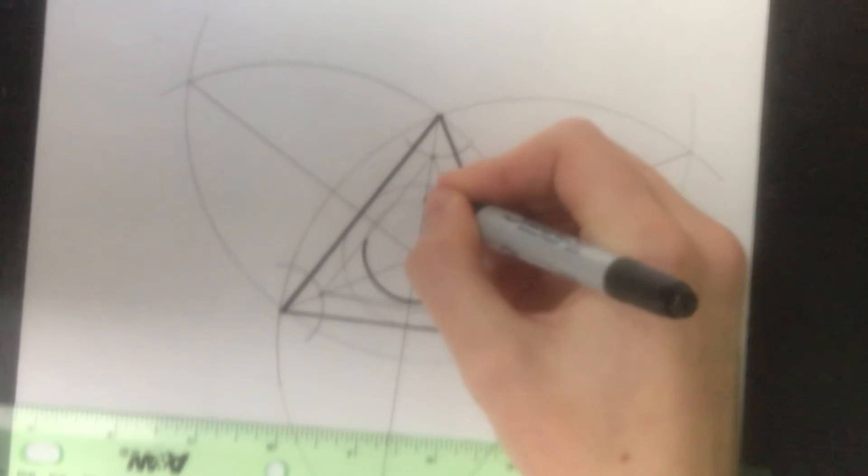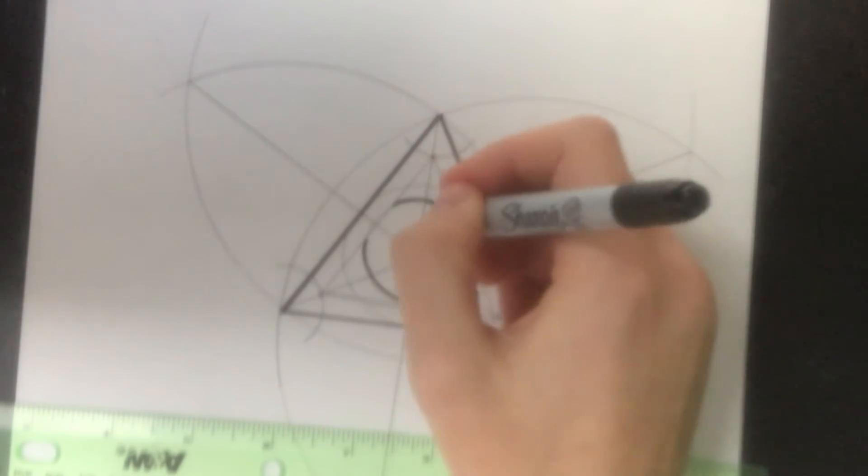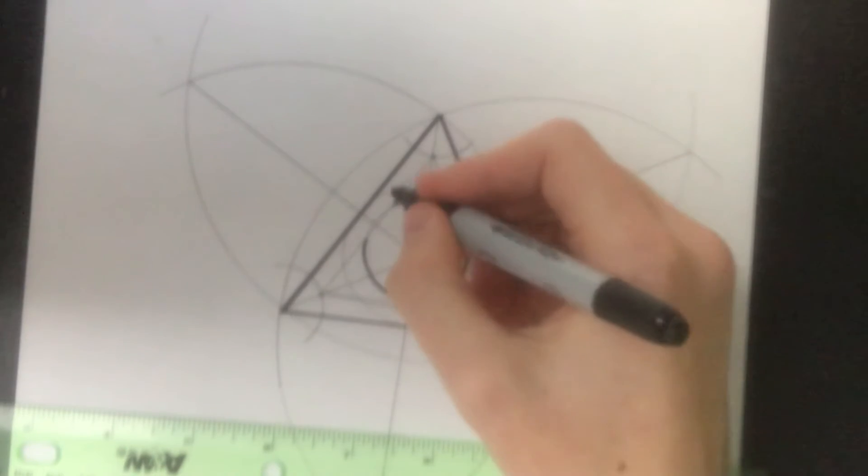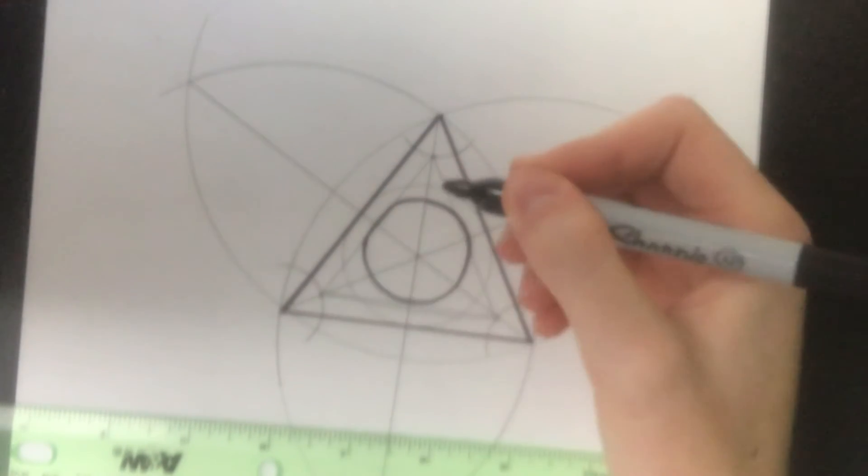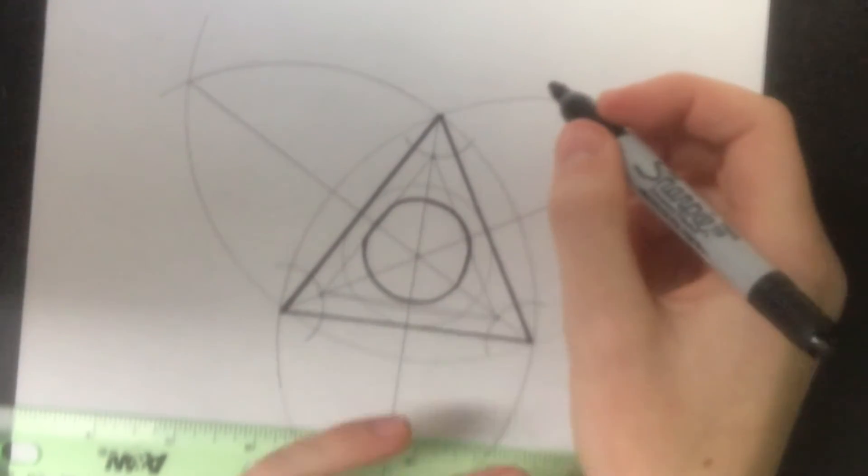Although, like here, if you have a point where your inside circle strays beyond the inner triangle, just go along the inner triangle line. It'll look fine either way. Okay, so now what you're gonna do, this is where things get a little bit more complicated.